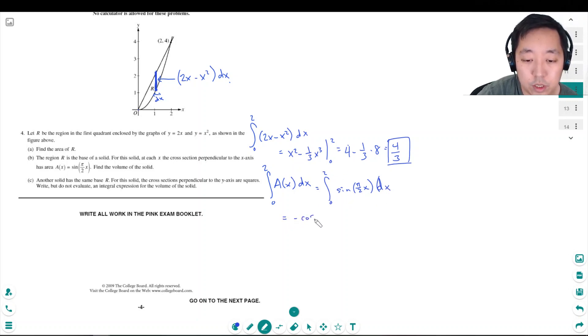It's negative cosine π over 2x. But I gotta divide it by π over 2, right? Kind of by chain rule, so to speak, or u-substitution, from 0 to 2.